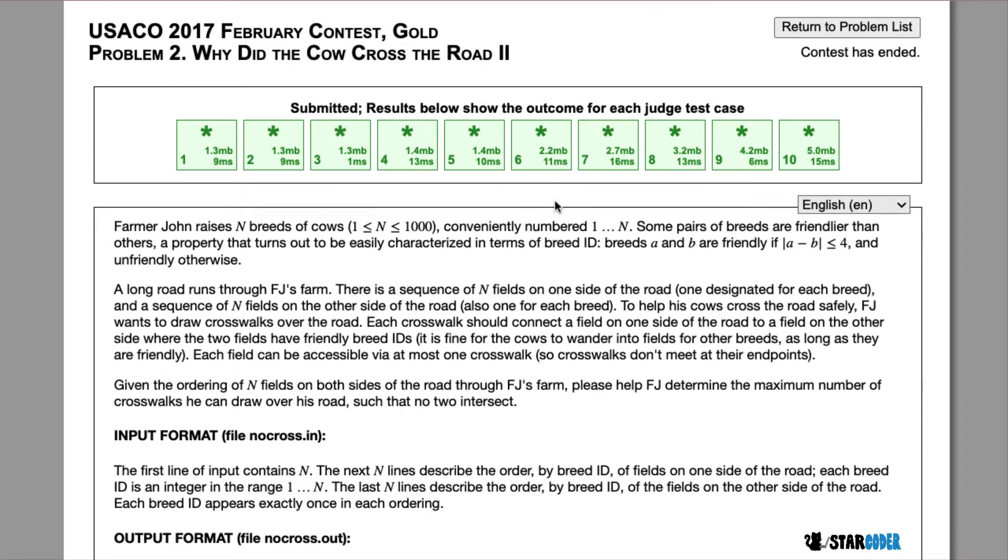In this question Farmer John has n breeds of cows and he has a road in the middle with farms on each side. He has n farms on each side so each breed is going to have one farm on the left and one on the right.